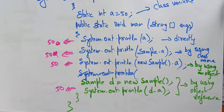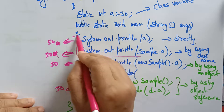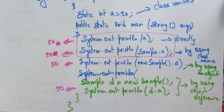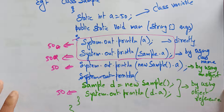In all four cases the output is 50. But the first two methods — direct access and using class name — are preferable because they are easier and don't occupy extra memory. Object and object reference methods are the last resort.